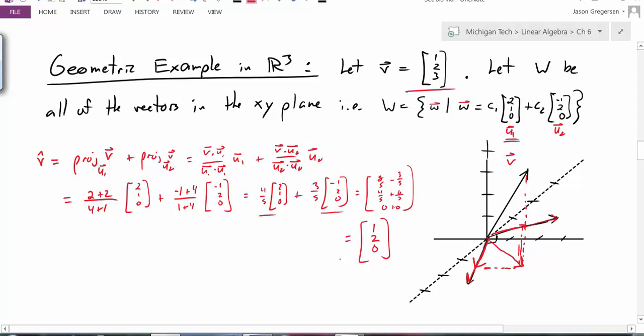And of course, if I look at what v is, 1, 2, 3, I should be able to see also that if I projected that down on the xy plane, 1, 2, 0 makes sense as a result.